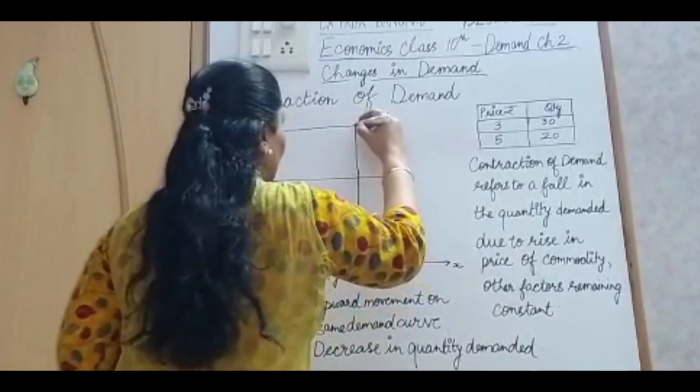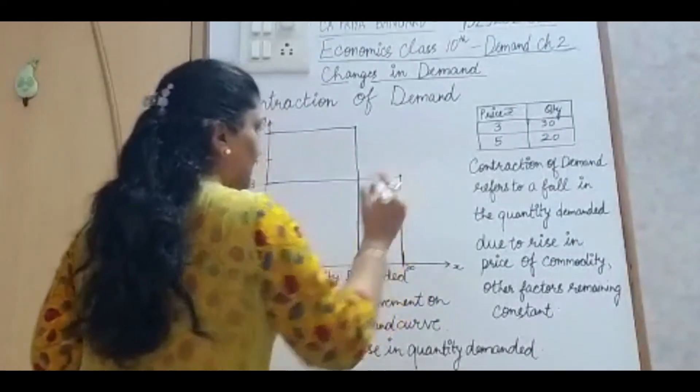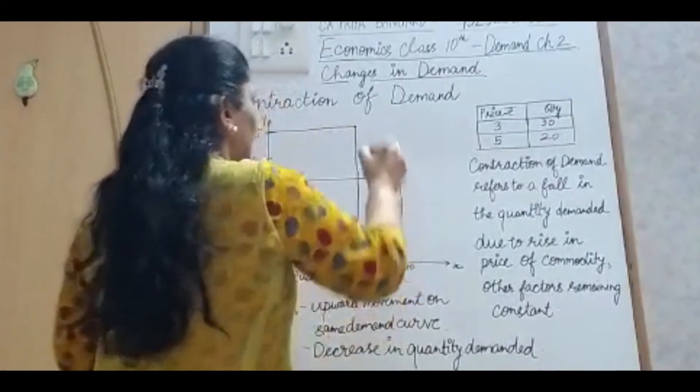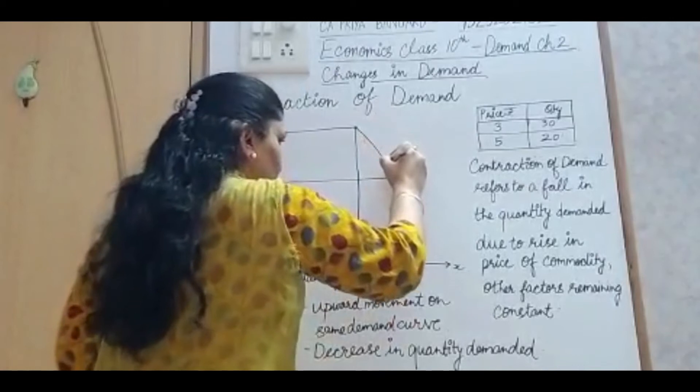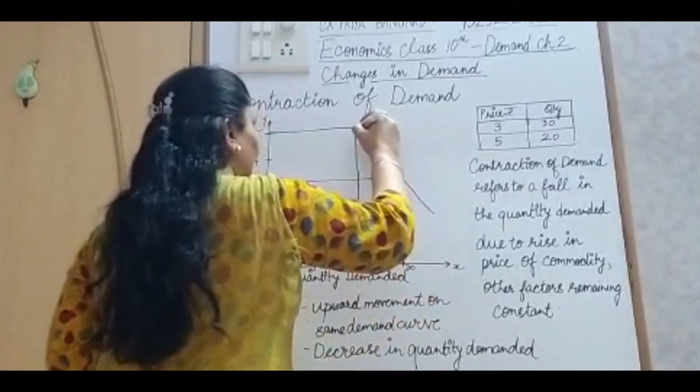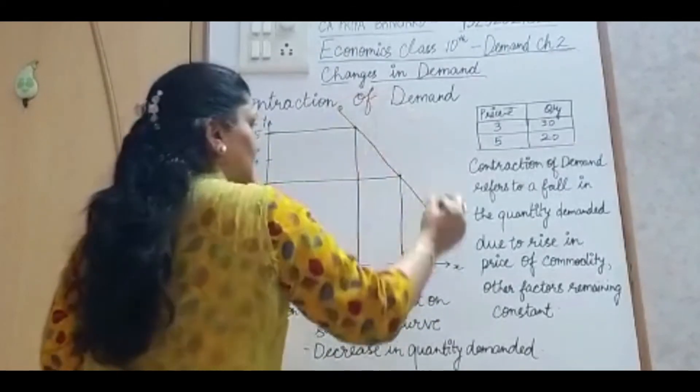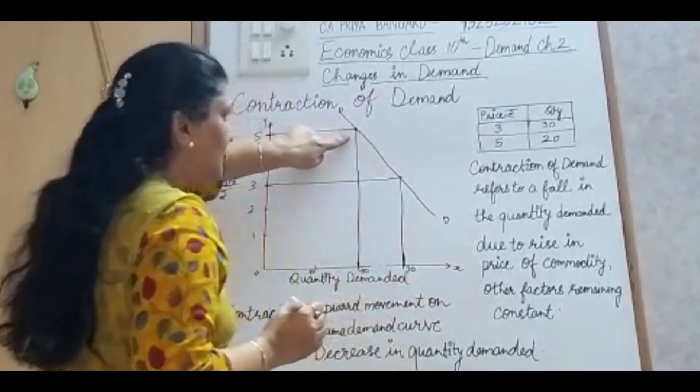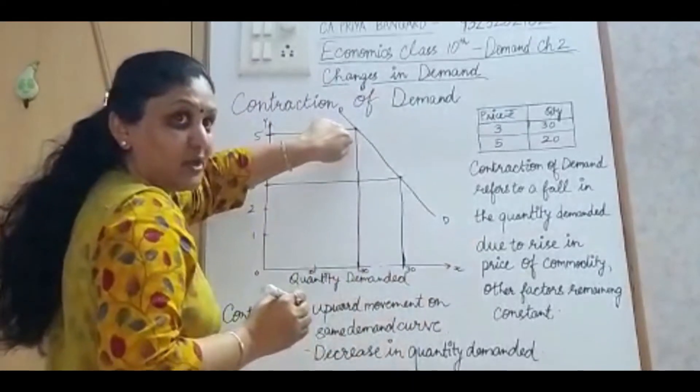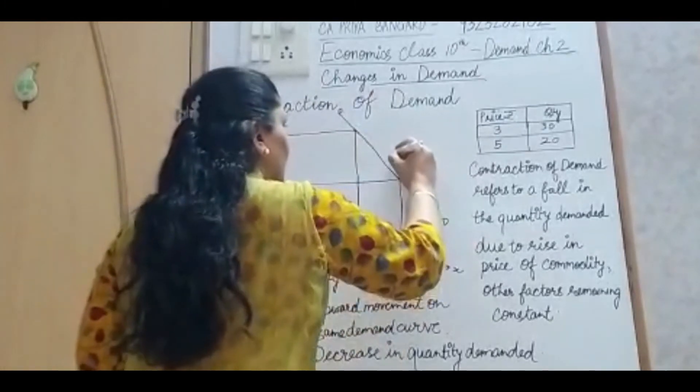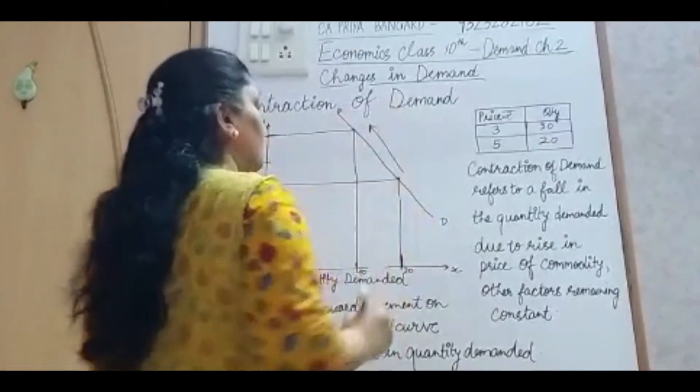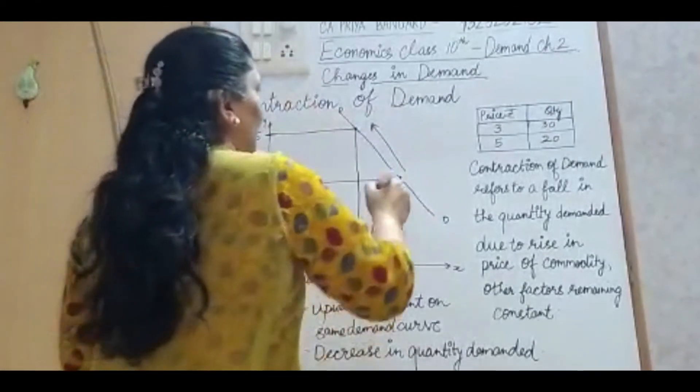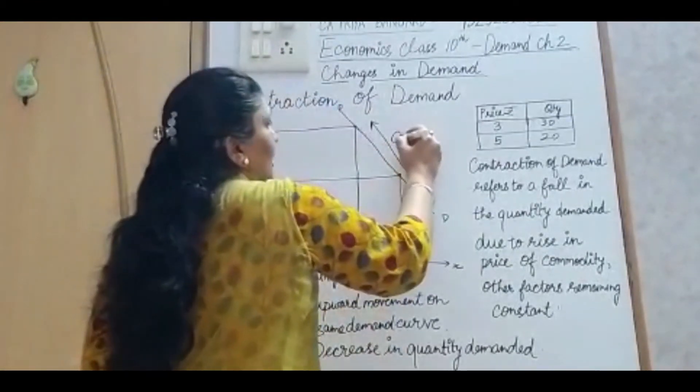So the earlier point was here. And now what I have got is here. So if I join these two, I get the demand curve D like this. So from this point, the new equilibrium which we have got is on this point. So it is an upward movement on the same demand curve and that is called as contraction.